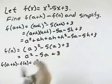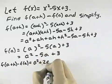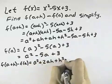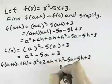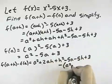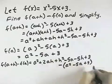that will be plus 2ah plus h squared minus 5a minus 5h plus 3, but we'll be subtracting a squared minus 5a plus 3.